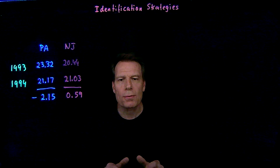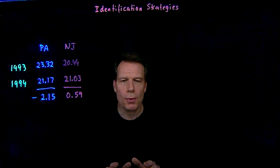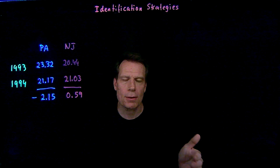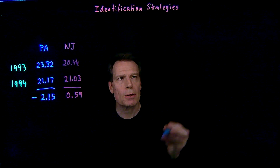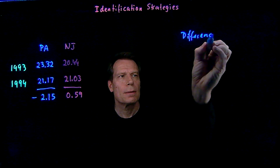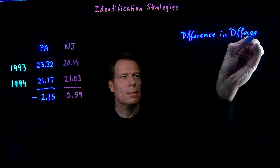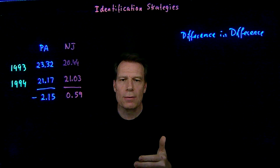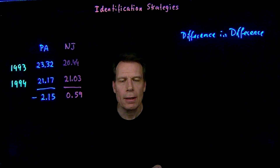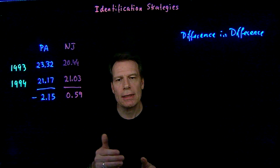In class, we went over three types of identification strategies, and I want to briefly review those before we progress in the course. The first strategy we talked about was called difference-in-differences. We focused on the increase in the minimum wage in New Jersey that happened in 1994, but wasn't accompanied by a similar increase in the minimum wage in neighboring Pennsylvania.